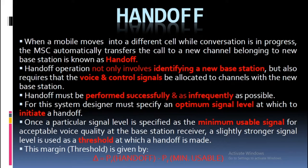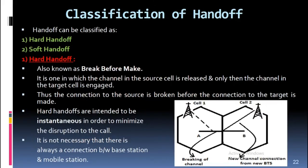Handoff can be classified as: (1) hard handoff and (2) soft handoff. Hard handoff, also known as 'break before make,' is one in which the channel in the source cell is released, and only then the channel in the target cell is engaged. Thus the connection to the source is broken before the connection to the target is made.